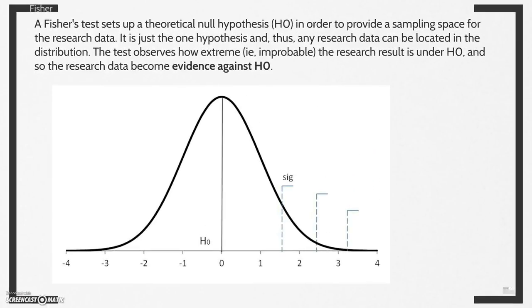Fisher's test sets up a theoretical null hypothesis in order to provide a sampling space for the research data. This is just the one hypothesis, and thus any research data can be located in the distribution. The test observes how extreme, that is improbable, the research result is under this null hypothesis, and so the research data becomes evidence against the null hypothesis.